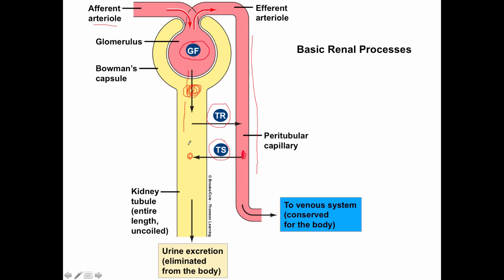Tubular reabsorption means taking back something we filtered. Tubular secretion means adding to urine something that wasn't originally filtered. When all of tubular reabsorption and secretion is complete, we're left with a final composition of urine that gets eliminated from the body. This urine originates entirely as plasma in the afferent arteriole, and its composition is set through these three steps: glomerular filtration, reabsorption, and secretion.